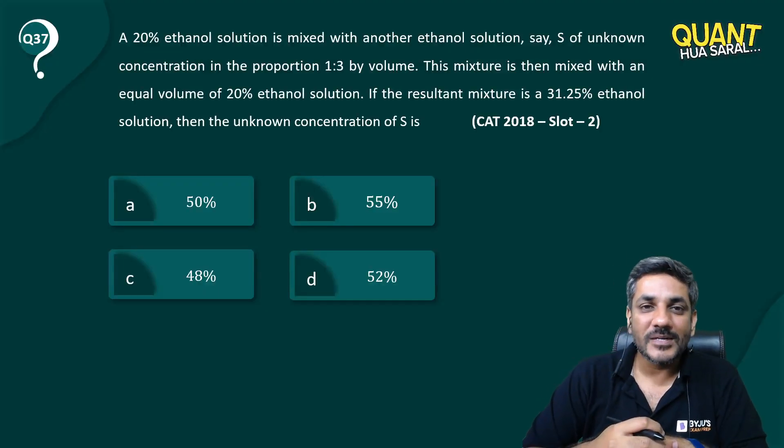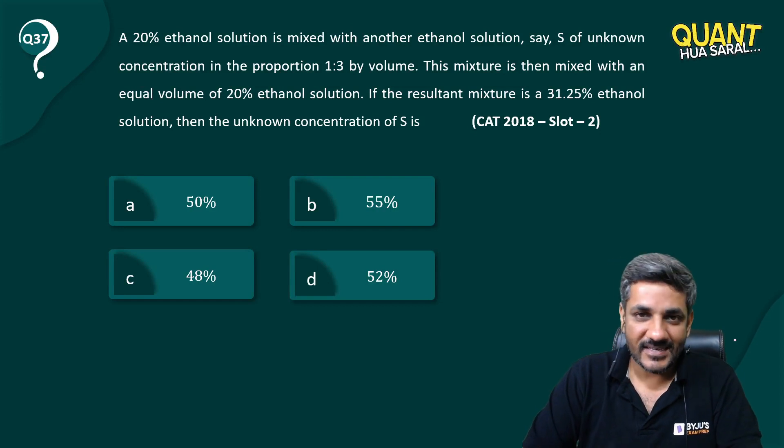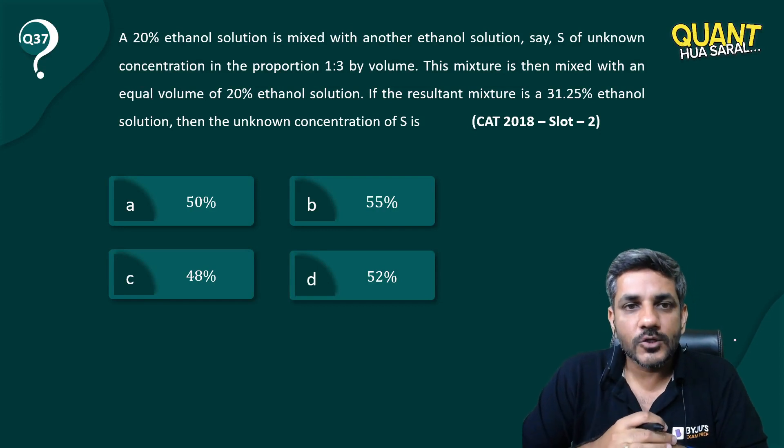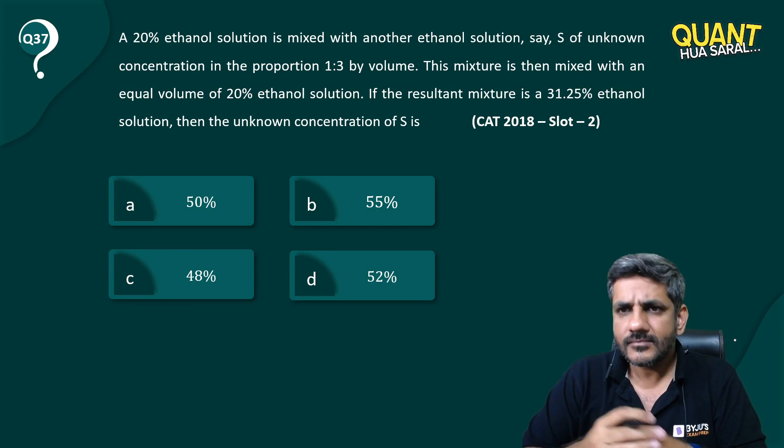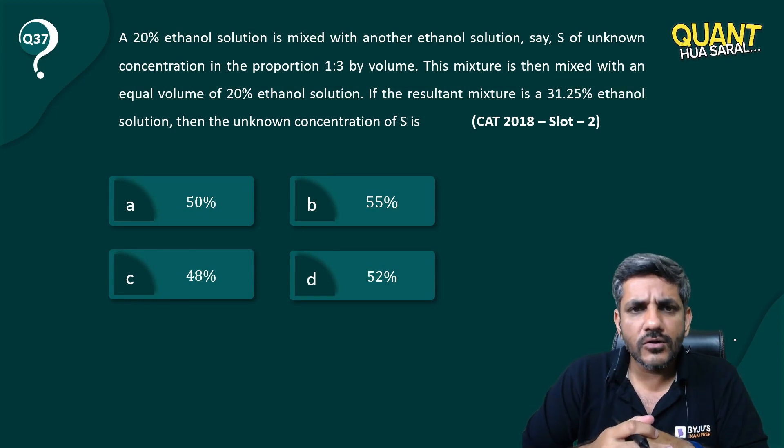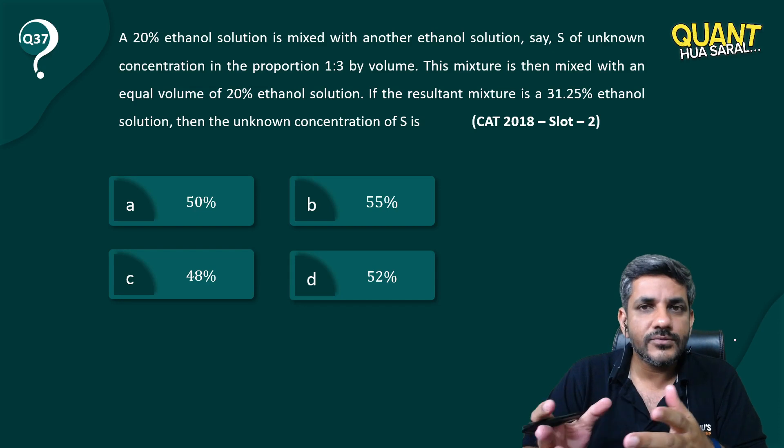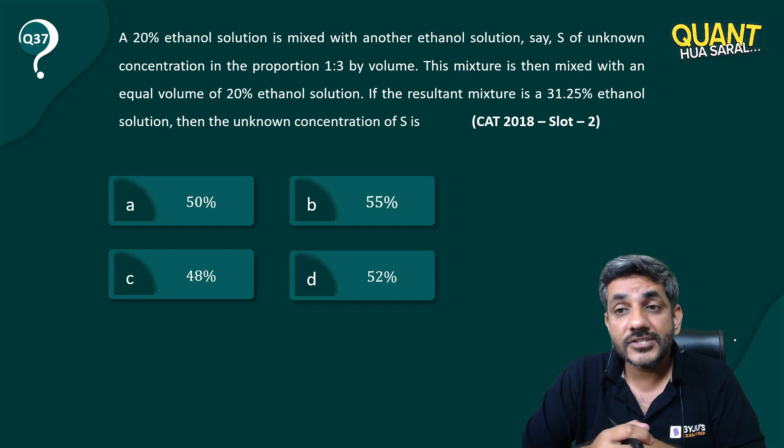Hello, welcome back to question number 37 of the series. Let's have a look. A 20% ethanol solution is mixed with another ethanol solution, say S, of unknown concentration in the proportion 1:3 by volume. This mixture